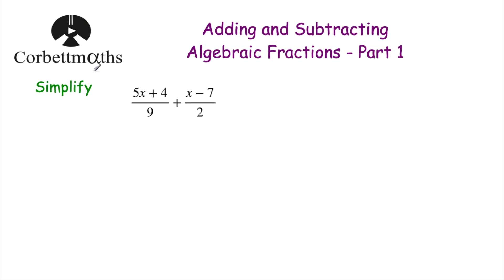So first of all we've got: simplify (5x + 4)/9 + (x − 7)/2. So we're going to be adding these algebraic fractions together. When we're adding together fractions it's fantastic if we can get the same denominator. So if we want to get the same denominator, let's have a look at the denominators here.